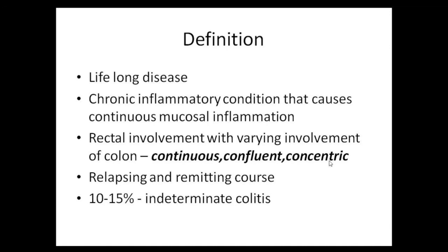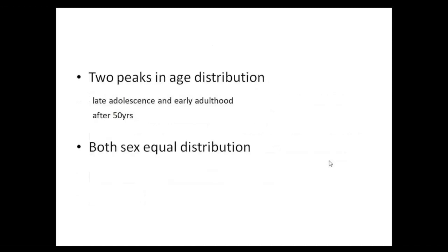Around 10 to 15 percent of patients will have indeterminate colitis, meaning they have features of both ulcerative colitis and Crohn's, which has to be treated separately. There are two peaks in age distribution: one in late adolescence and early adulthood, in the 20s and 30s, and a second peak after 50 years. There is equal sex distribution.